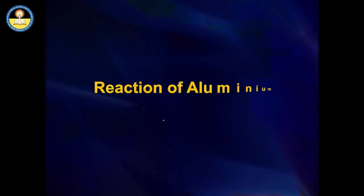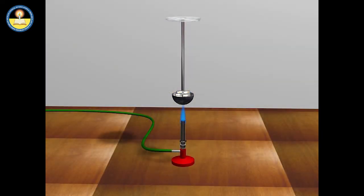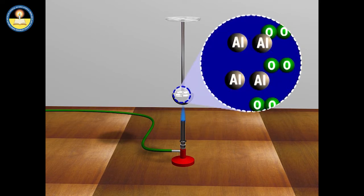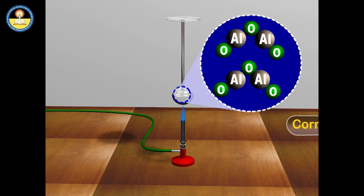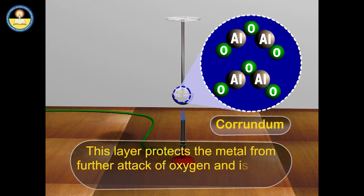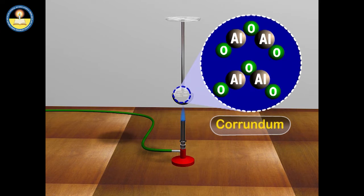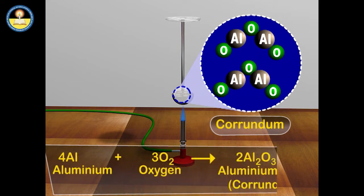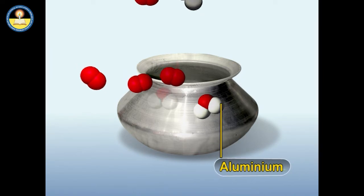Reaction of Aluminium with Oxygen. Aluminium, when heated with oxygen, forms an inert layer of aluminium oxide called corundum. It protects the metal from further attack of oxygen — this is called a protective layer of oxide. Corundum is used for the preparation of sandpaper. The equation: 4Al + 3O₂ → 2Al₂O₃ (aluminium oxide or corundum).